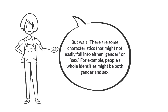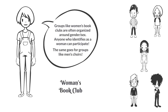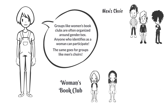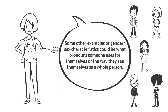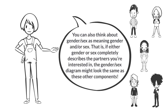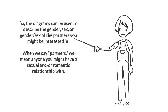There are some characteristics that might not easily fall into either gender or sex. For example, people's whole identities might be both gender and sex. Groups like women's book clubs are often organized around gender sex — anyone who identifies as a woman can participate. The same goes for groups like men's choirs. Some other examples of gender sex characteristics could be what pronouns someone uses for themselves, or the way they see themselves as a whole person. Some identity labels related to gender sex could be woman, trans man, or non-binary, among others. You can also think of gender sex as meaning gender and or sex — if either gender or sex completely describes the partners you're interested in, the gender sex diagram might look the same as these other components.